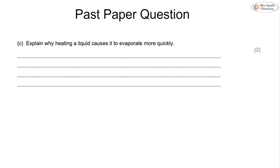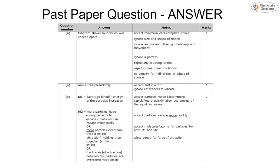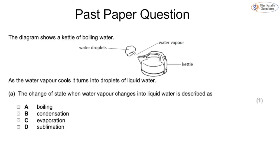For two marks: explain why heating a liquid causes it to evaporate more quickly. Remember, the difference between evaporating and boiling is about how many particles are heated. When you heat something, the energy of the particles increases, and therefore more particles have enough energy to escape the liquid and move freely to become a gas. The mark scheme confirms: heating increases particle energy, so more particles have sufficient energy to escape.